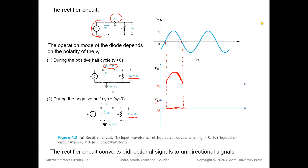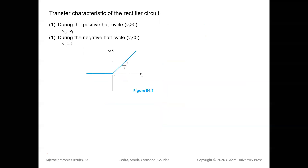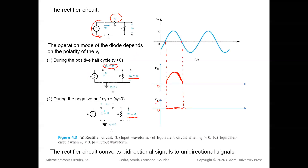When the diode is an open circuit there is no current, so the voltage drop across the resistance is zero. Therefore VO equals zero during the negative half cycle. VD equals VI during the negative half cycle.